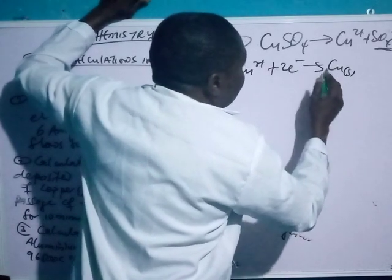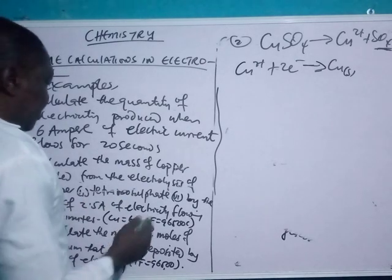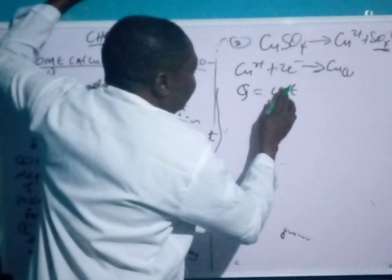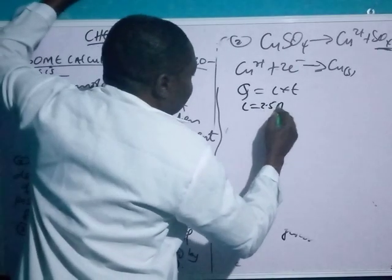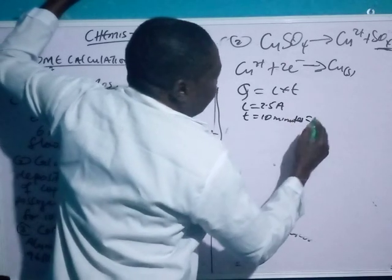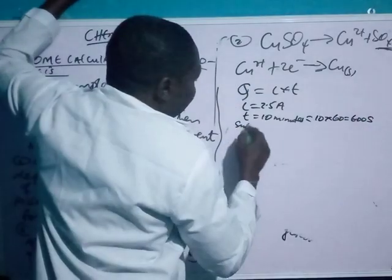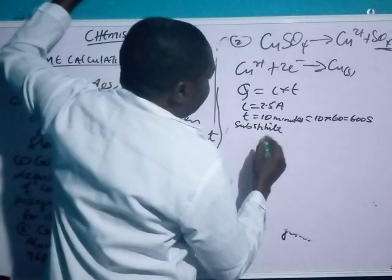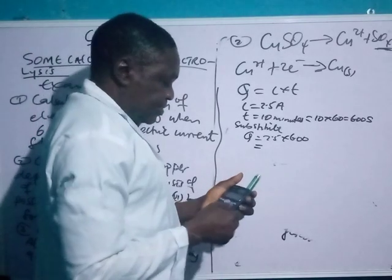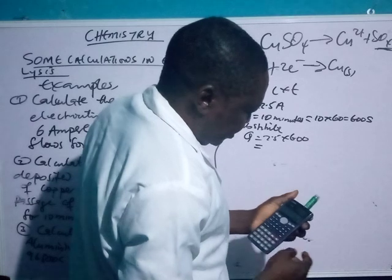At the cathode: Cu²⁺ + 2e⁻ → Cu(solid). This is what we need to calculate the mass of. Current is 2.5 amperes and time is 10 minutes. Convert 10 minutes to seconds: 10 × 60 = 600 seconds. Substituting: Q = 2.5 × 600 = 1500 Coulombs.